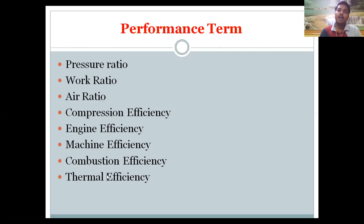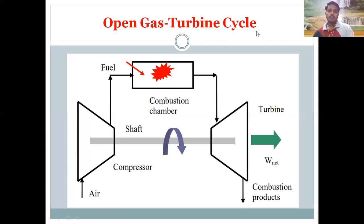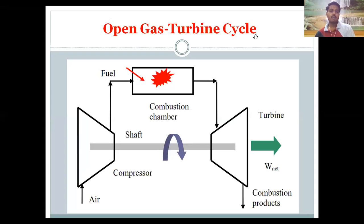These performance terms are used to analyze the gas turbine power plant. Using these formulas, we can determine the efficiency of the gas turbine power plant and calculate related terms. The gas turbine power plant can be classified by cycle into open cycle, closed cycle, and semi-closed cycle.